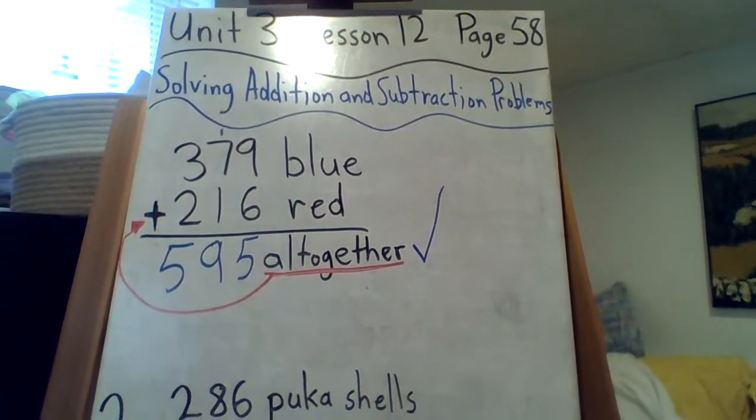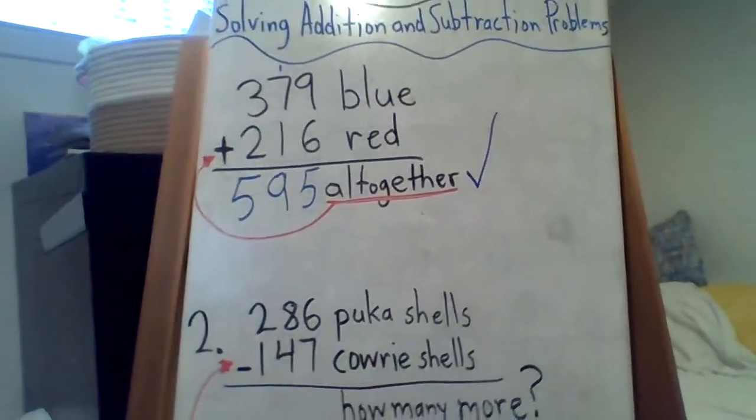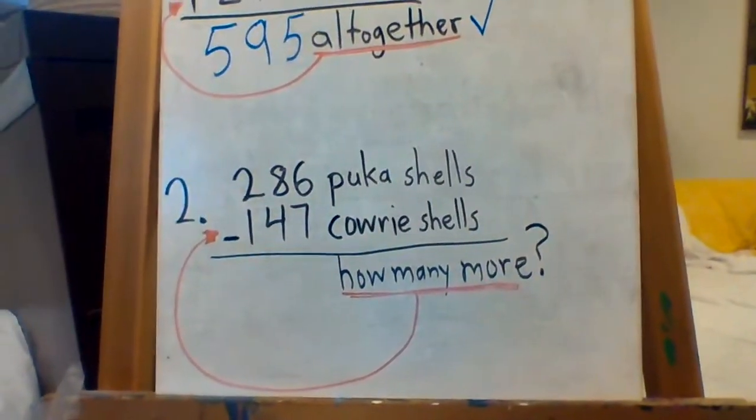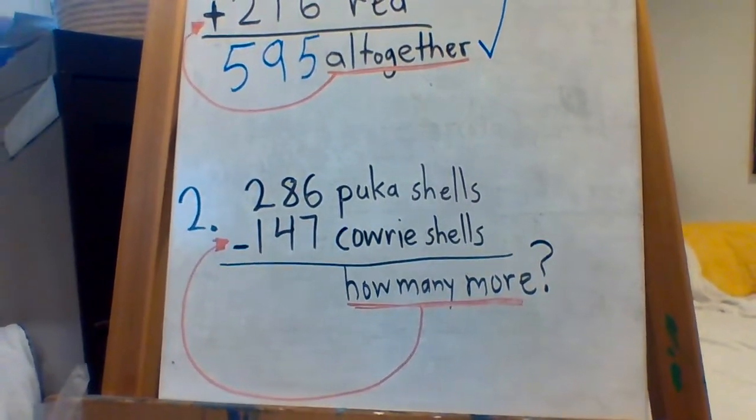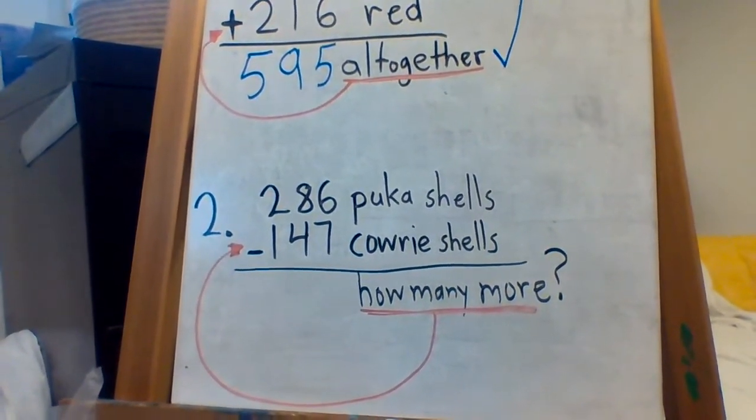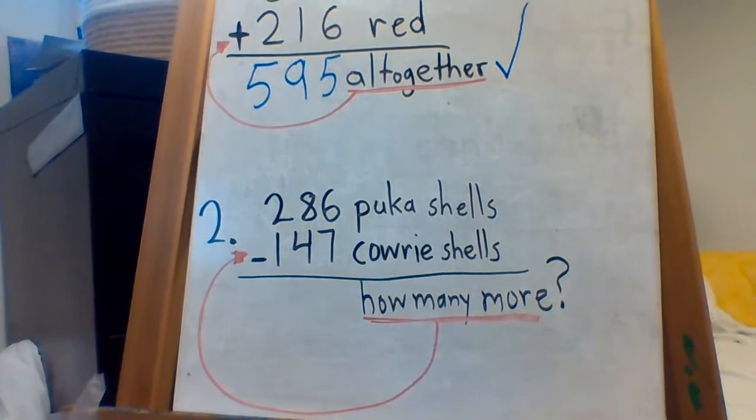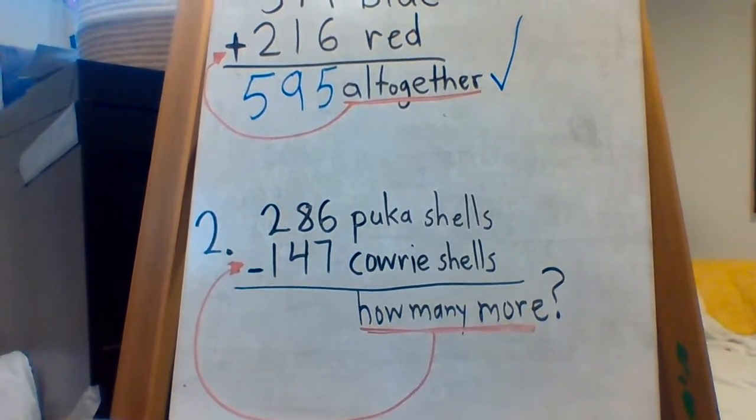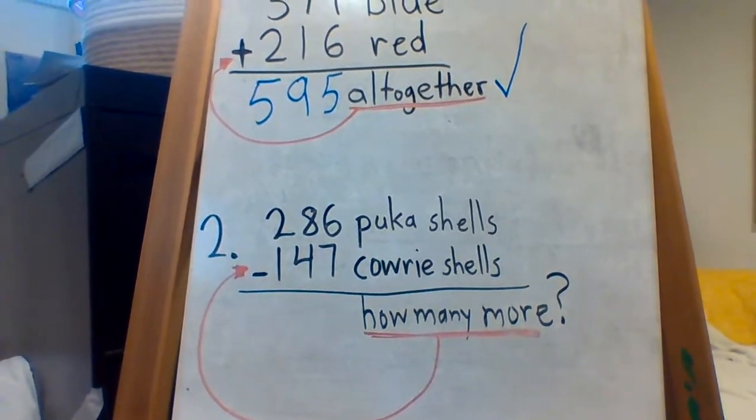Now 2, on the other hand, has the other phrase, the other words I want you to notice, because these are the subtraction words. So this one says, Cynthia has 147 cowrie shells, so a bunch of shells, and 286 puka shells. Lots of shells.